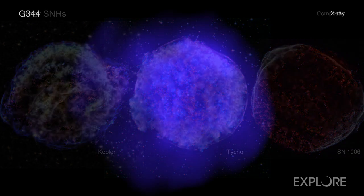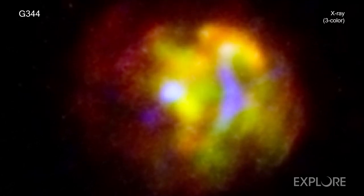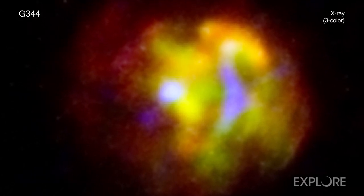By looking deeply at G344.7-0.1 with Chandra, astronomers have a window into an important phase later in the evolution of a Type Ia supernova remnant.